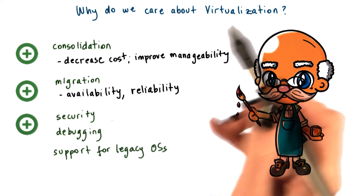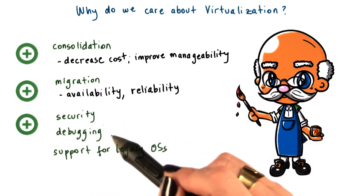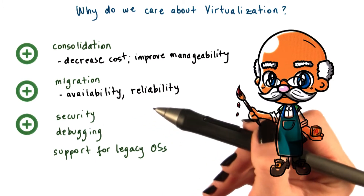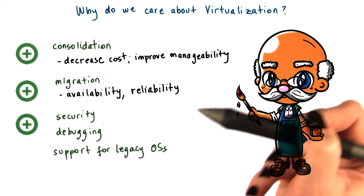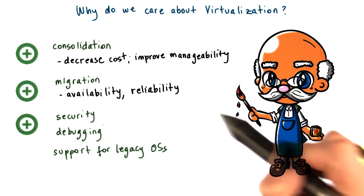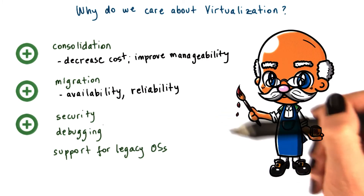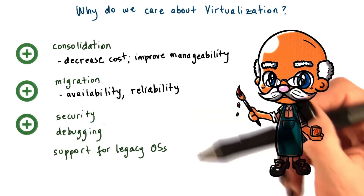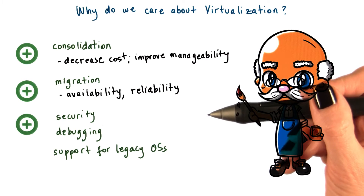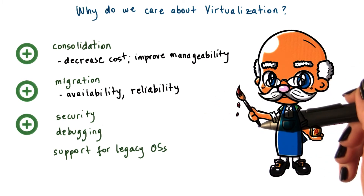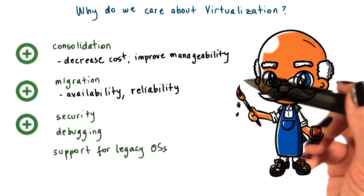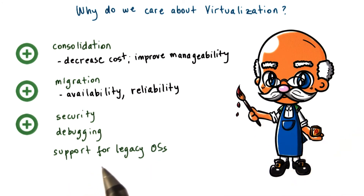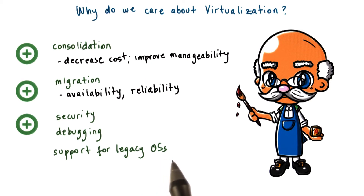Speaking of debugging in particular, virtualization has delivered some other benefits — it has become a very important platform for operating systems research. It lets systems researchers quickly introduce new operating system features and test them in the OS that's encapsulated in a VM. And then they have the ability to more quickly view the effects and debug them, as opposed to a more traditional cycle which would have included hardware restarts and searches through log files and error files.